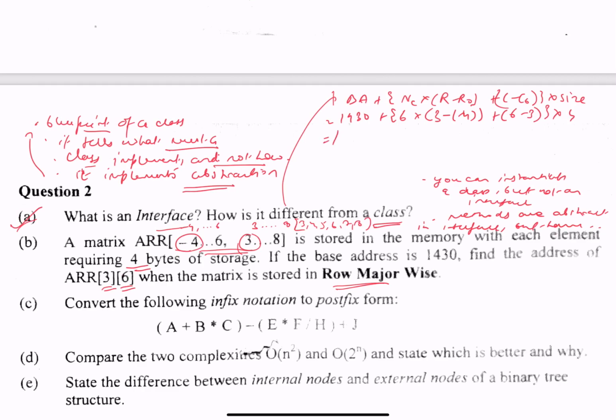3 minus -4 is 7, right? r is 3, r₀ is -4, so 3 plus 4 equals 7, 6 times 7 is 42.